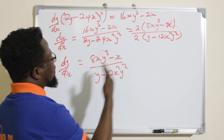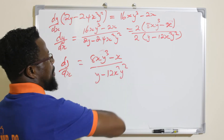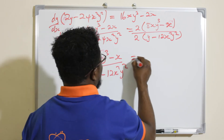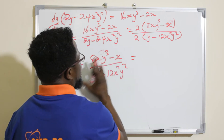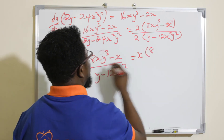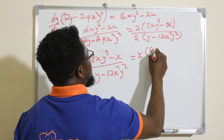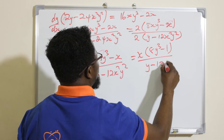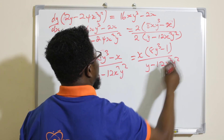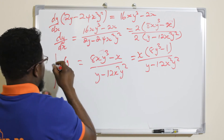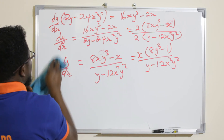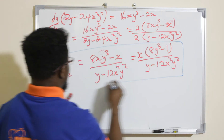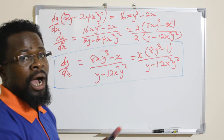We can still factor out x from the numerator if we wish: dy/dx = x(8y³ − 1) / (y − 12x²y²). Either form is acceptable. We have found dy/dx for that equation.